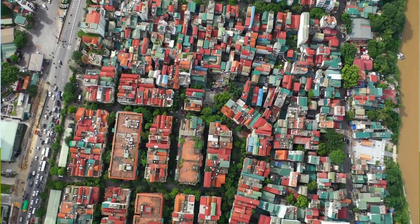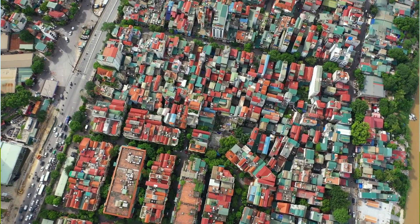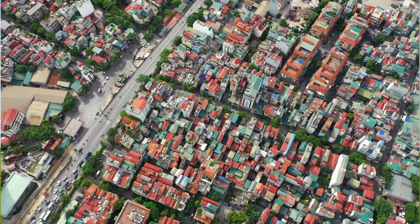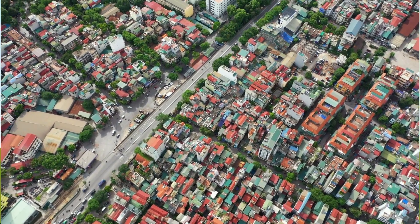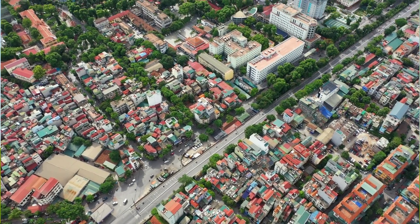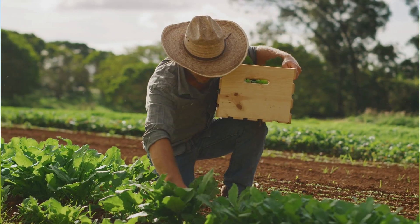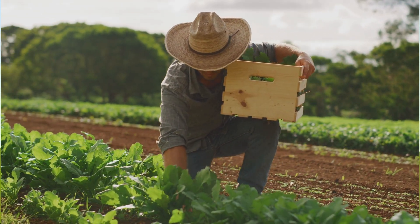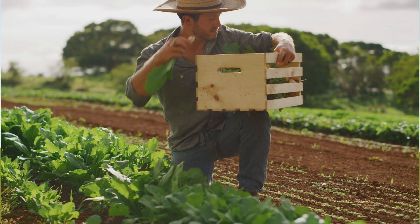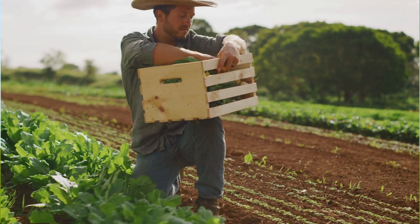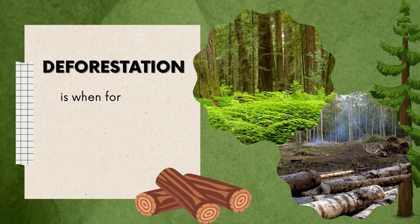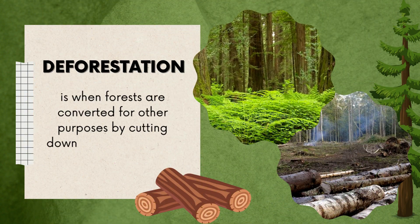Every year, the population of Earth rises. They need greater space to live and work, and they need additional food as well. Huge sections of forest are removed to give space for building homes, expanding cities, and growing food for human consumption. These activities cause land pollution called deforestation.